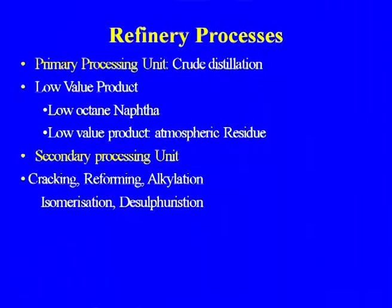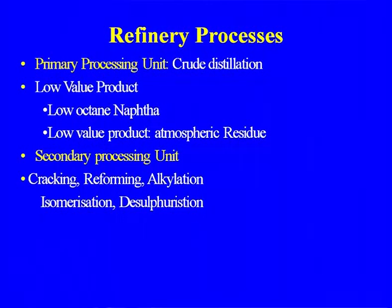We have already discussed the distillation of crude oil and some introductory parts of the petroleum refinery. As discussed in lecture one, there are two major processes in the refinery: the primary process unit and the secondary process unit. In the primary process unit, we do crude oil distillation. We get a number of low-value products which we cannot use as-is, so to increase their value, we go for secondary conversion processes.